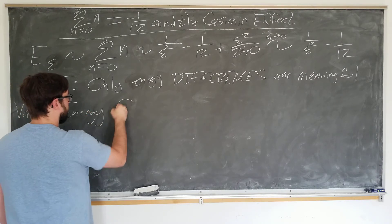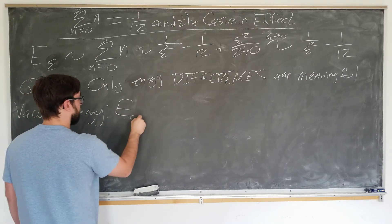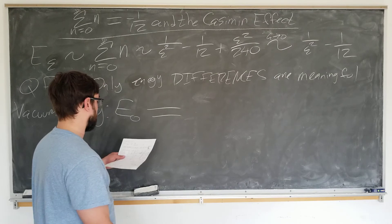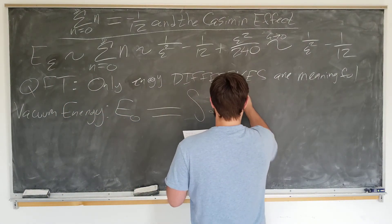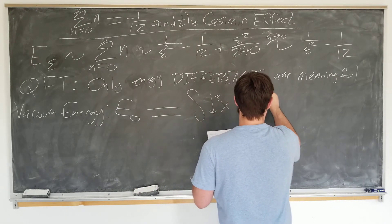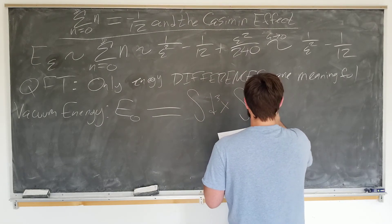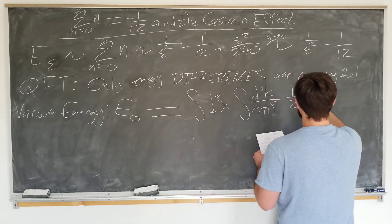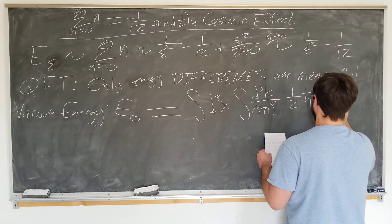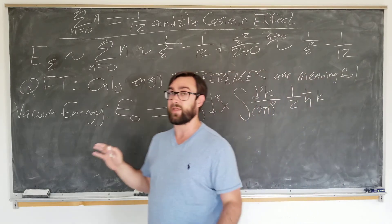We're calling E_0 to be equal to a doubly infinite expression. We have integral of d cubed x, integral of d cubed k over 2 pi cubed times one-half h-bar k. Now, this looks intimidating, but it's not.